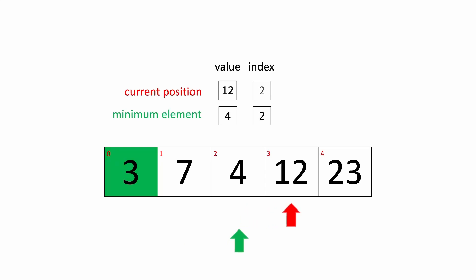We move the current position over to the next index. Now, is 12 less than 4? It is not, so we don't do anything. We just simply move the current position over to the next array index.